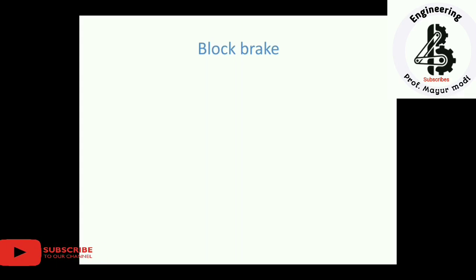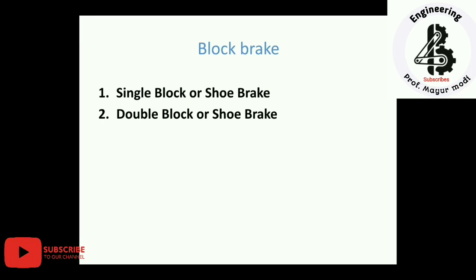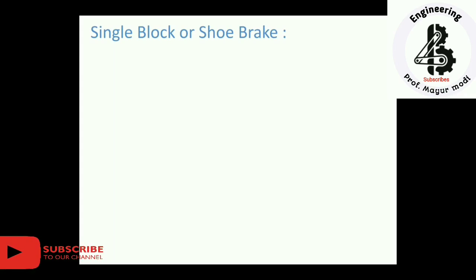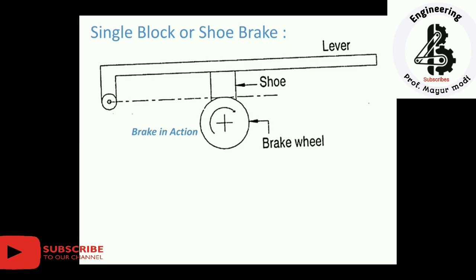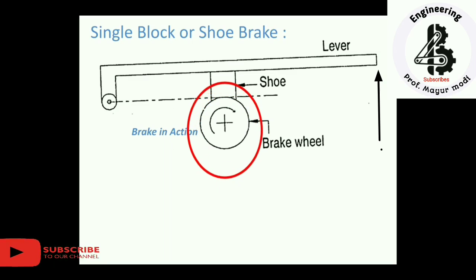Starting with the block brake, focusing on mechanical brakes. The first type is the single block brake, also called single shoe brake. Looking at the diagram, the brake wheel is a rotating element. With the help of a lever and shoe mechanism, the shoe material is brought into contact with the outer periphery of the brake wheel, generating friction between the brake wheel and the shoe material to control the speed.